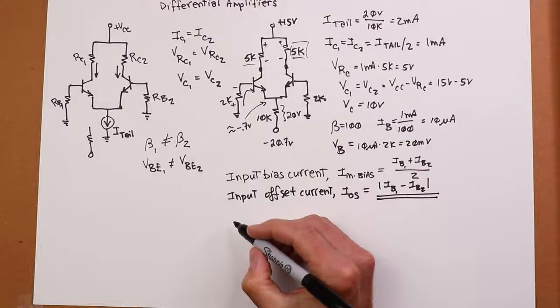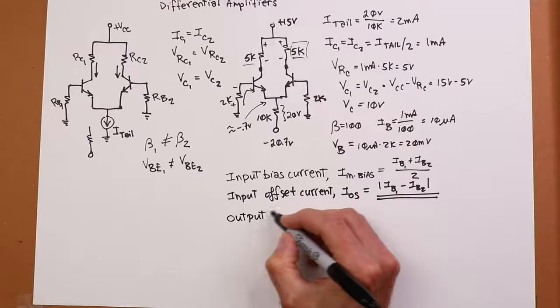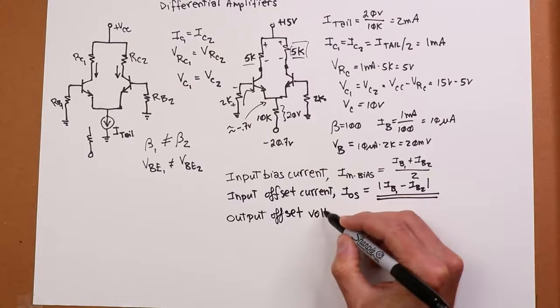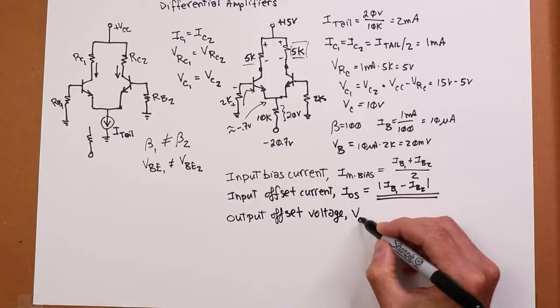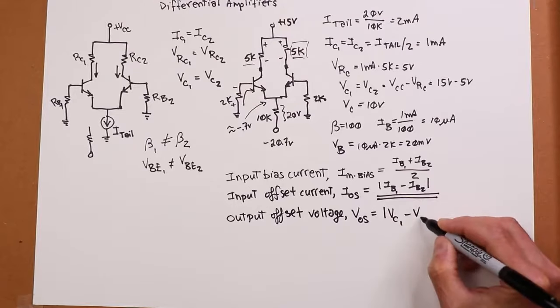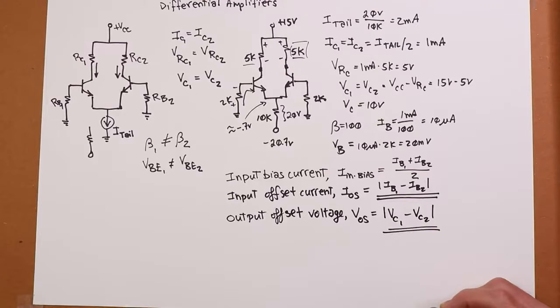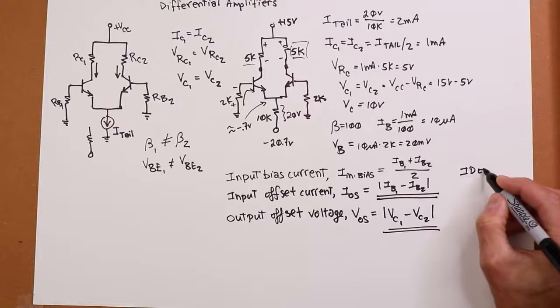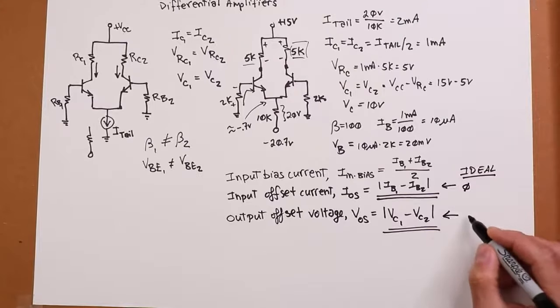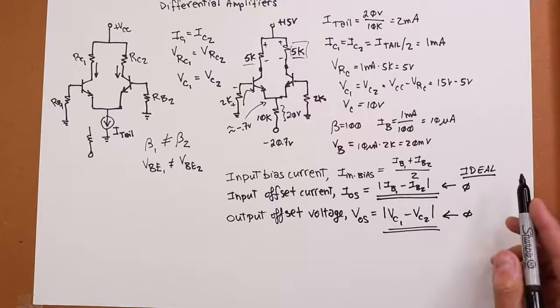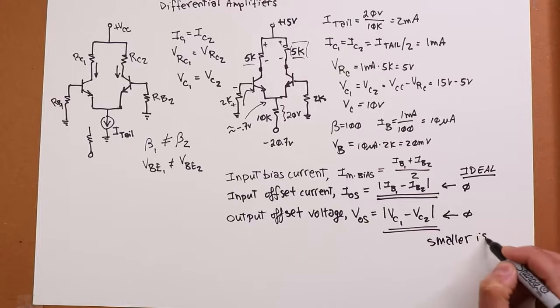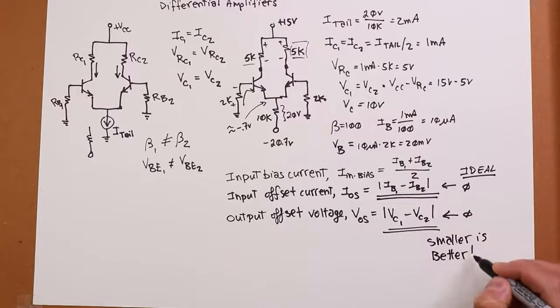Then looking at the output end, we can talk about an output offset voltage. So I was talking a moment ago about the two collectors not being identical. So we call that VOS. And it's a very similar sort of thing. It's just a matter of what is the absolute value of VC1 minus VC2. So ideally, in the ideal case, this thing is zero. There is no offset current. They're identical. Same thing for the output offset voltage. That's also zero. In reality, they're not going to be. So, the thing to remember is smaller is better.